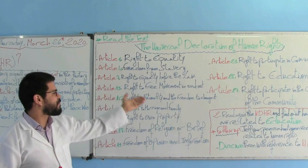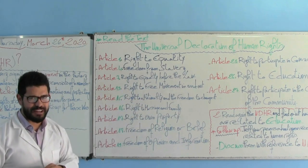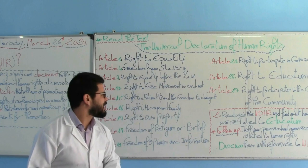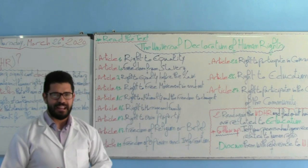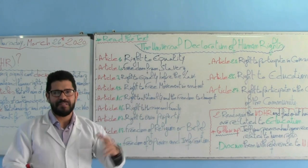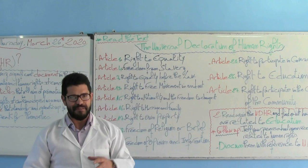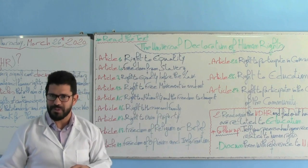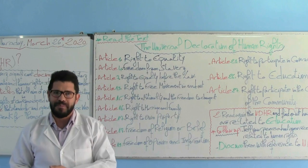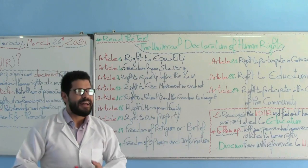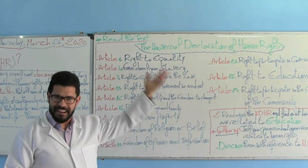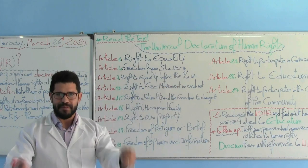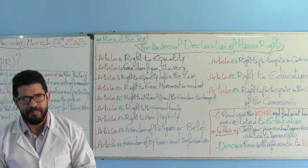Article number 13: Right to free movement in and out of the country. I have the right to move from one city to another, from one geographical place into another territory. Nobody has the right to stop me from doing so. And I have the right to fly or travel overseas, provided I have the right to do so.